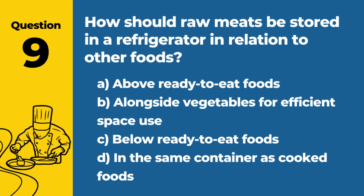Question 9. How should raw meats be stored in a refrigerator in relation to other foods? Answer: C. Below ready-to-eat foods. Storing raw meats below ready-to-eat foods prevents juices from contaminating other items.